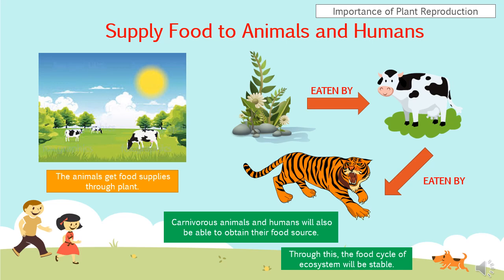Let me explain how plant reproduction can supply food to animals and also humans. Through plants, animals will be able to get their food supplies. For example, if you look at the picture in this slide on the left side, the cow is herbivorous, so they can eat greens from the plants. This applies to all of the animals that eat plants. Other than that, the food cycle of the ecosystem will also be stable.